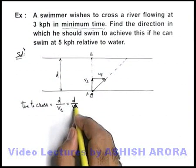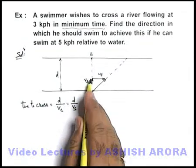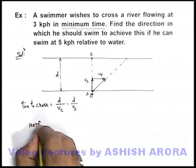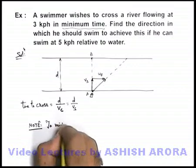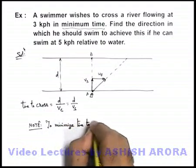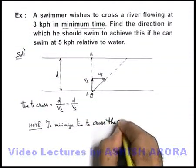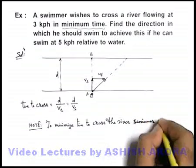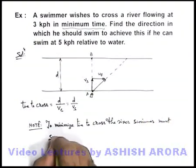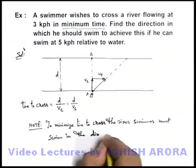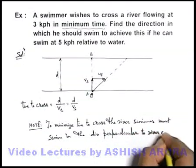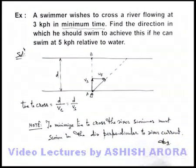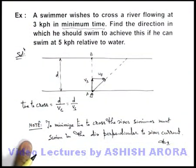So to minimize time, he must swim in the direction perpendicular to the river current. As a theoretical note to keep in mind for future questions: to minimize time to cross the river, the swimmer must swim in the direction perpendicular to the river current. This is the answer, and this result will help in several similar questions, so keep it in mind.